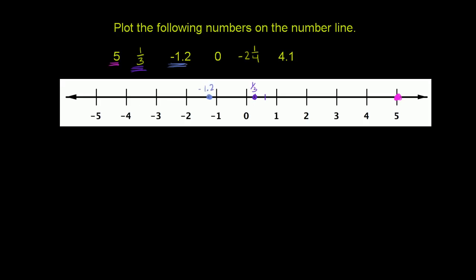0 is pretty straightforward. 0 is right over there. It's even labeled for us at 0. 5 was labeled for us, too, at 5.